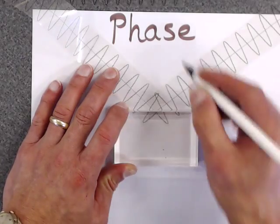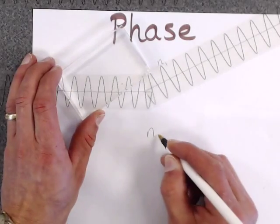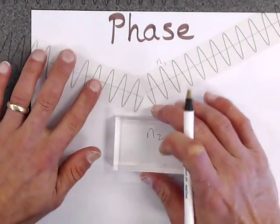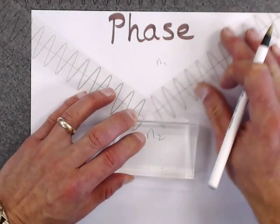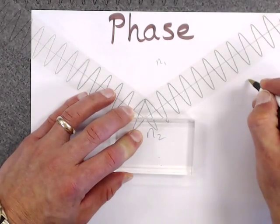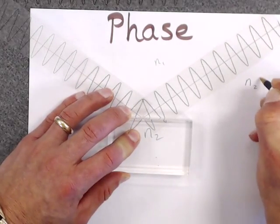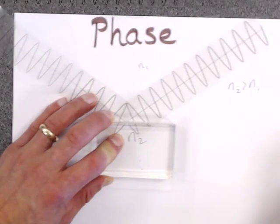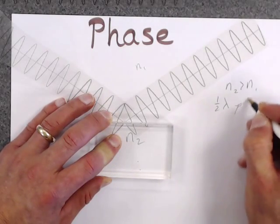So when, here's N1, here's N2. When N2 is greater than N1, there is a one-half wavelength phase shift.